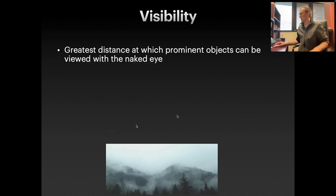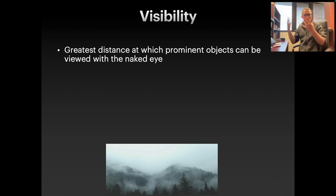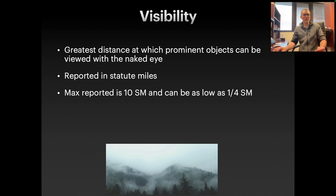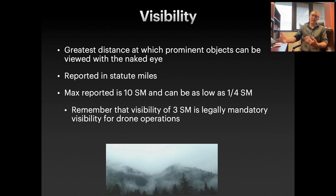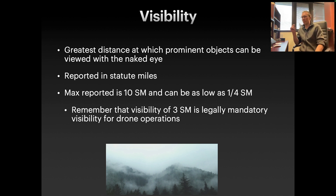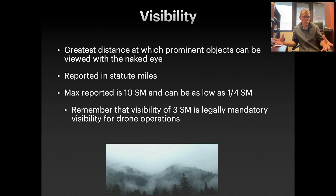Visibility is also going to be reported — that's the greatest distance at which prominent objects can be viewed with the naked eye. This is going to be reported in statute miles; the maximum reported is 10, but it can be as low as one quarter. Remember that a visibility of three statute miles is legally required for drone operations. For UAV operations, you're required to be able to see three statute miles, so if your METAR shows visibility of two or one statute mile, you're not going to be able to go out and fly.